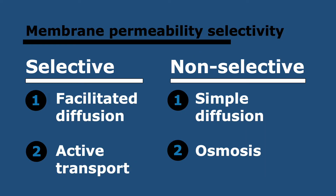Based on what we've looked at, we can classify these methods as selective or non-selective. Selectivity means allowing the passage of some particles but not others. Channel proteins and pump proteins — used in facilitated diffusion and active transport — are selective, whereas simple diffusion and osmosis are not selective; they simply depend on the size and polarity of molecules.